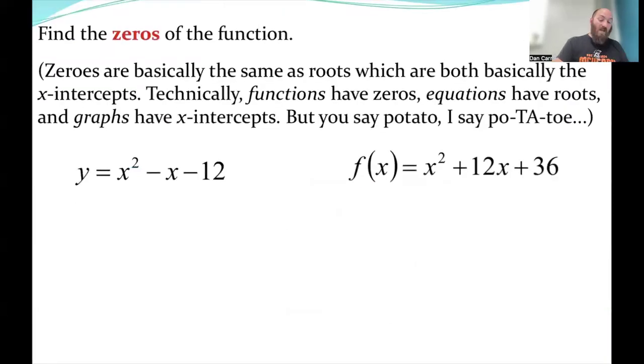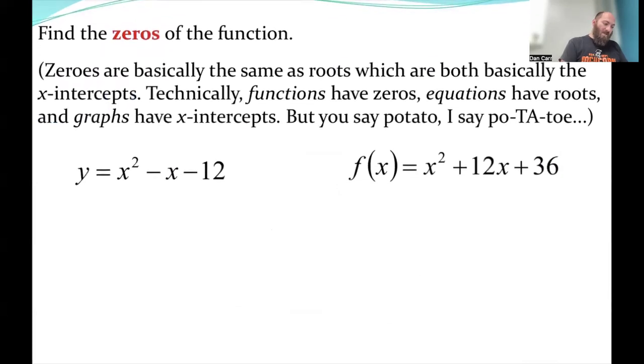Finding the zeros of the function. So again, I already mentioned this earlier, but zeros are being used to mean the same thing as our x-intercepts. It's our solutions. It's our roots. They all refer to the same idea. So we're basically finding our x-intercepts. So technically functions have zeros, equations have roots, and graphs have x-intercepts. You say potato, I say potato. It's a nice old reference for here. The idea is that we are still referring to the same thing. Where is our graph crossing the x-axis?